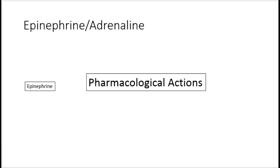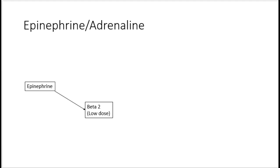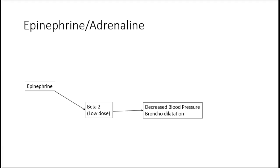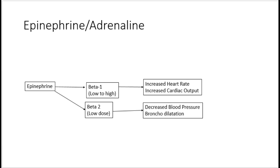Now let's discuss the pharmacological actions of epinephrine. At low dose, epinephrine predominantly acts on beta 2 receptors, leading to decreased blood pressure because of vasodilatation of blood vessels supplying skeletal muscles, as well as relaxation of bronchial smooth muscles leading to bronchodilatation. Between low to high dose, beta 1 action is consistent, leading to increased force of contraction, increased cardiac output and tachycardia.